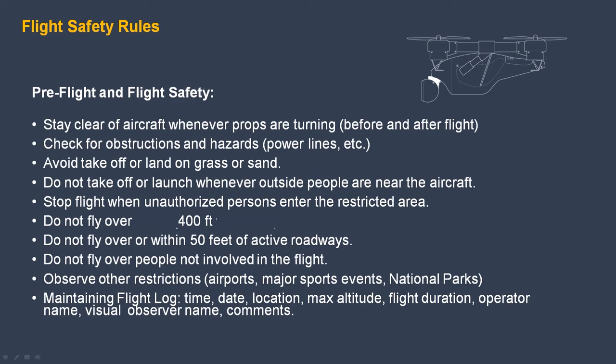Stay clear of aircraft whenever props are turning, before and after flight. Check for obstructions and hazards like power lines. Avoid takeoff or landing on grass or sand. Do not take off whenever outside people are near the aircraft. Stop the flight when unauthorized persons enter the restricted area. Do not fly over 400 feet. Do not fly over or within 50 feet of active roadways. Do not fly over people not involved in the flight. Observe other restrictions — airports, major sports events, national parks. Maintain a flight log: date, time, location, max altitude, flight duration, operator name, visual observer name, and comments.